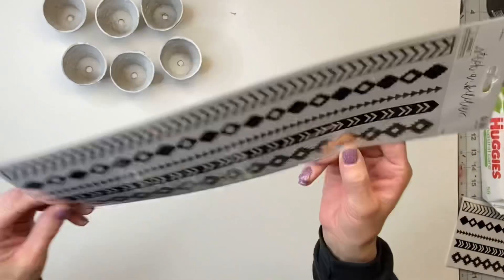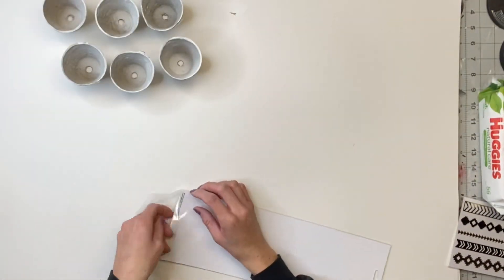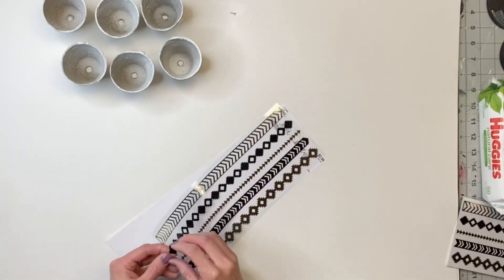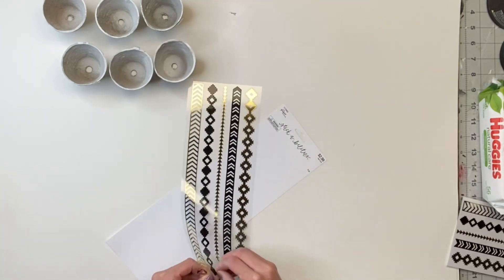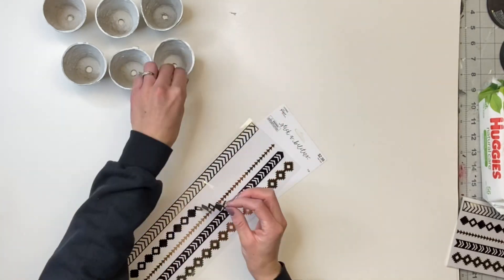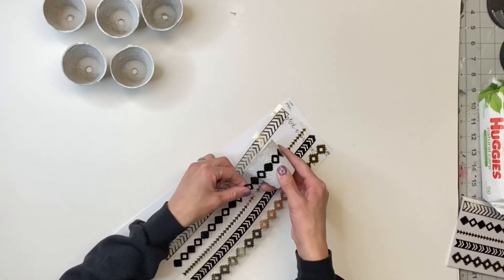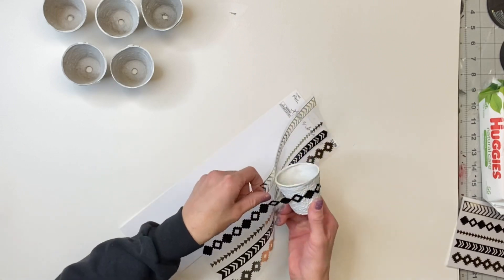I let those fully dry, and I got these stickers from Hobby Lobby, and I liked them because they were a long, skinny band. And it was the perfect design to wrap around my pot so that I could just add a little bit of a design to them.